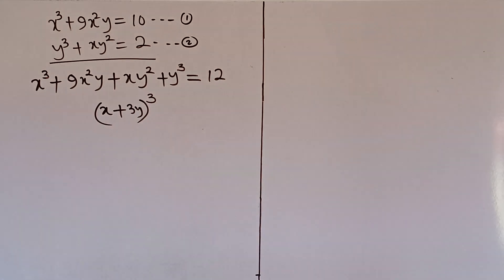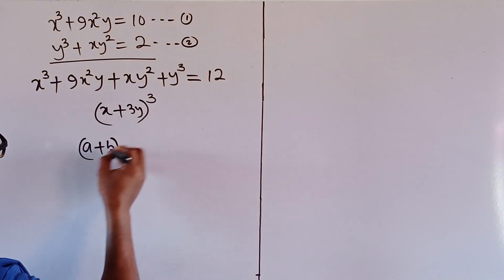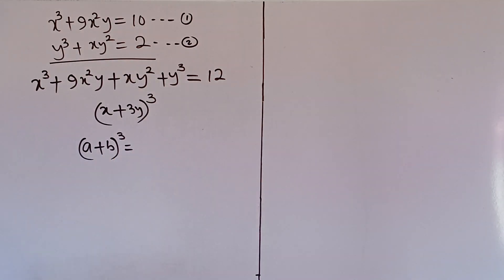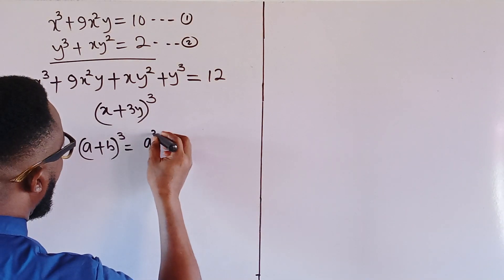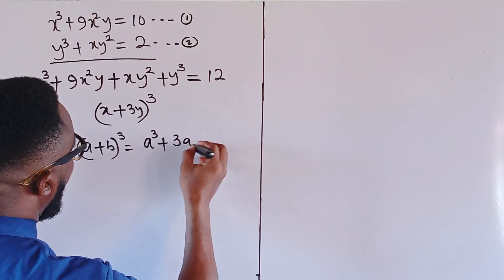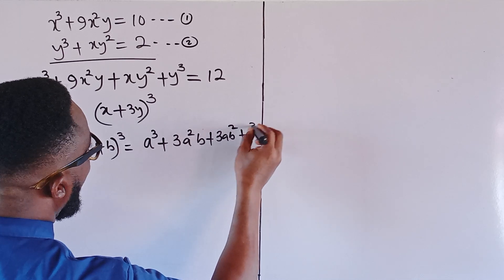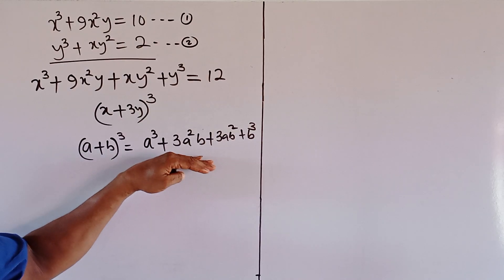This is where the insight in solving this problem lies, and I will recall a well-known binomial formula: (a + b) whole cubed. You can do this by repeated multiplication of (a + b) three times, or use Pascal's triangle or the binomial expansion. In whichever case you are going to have a cubed plus 3a squared b plus 3ab squared plus b cubed.